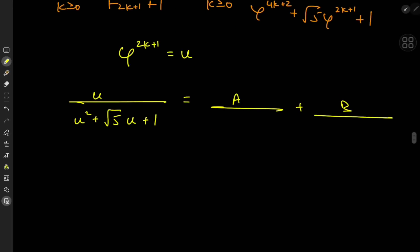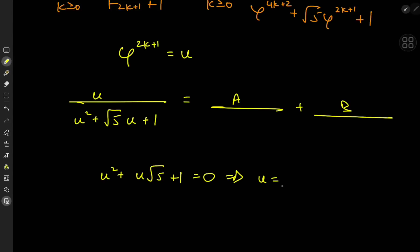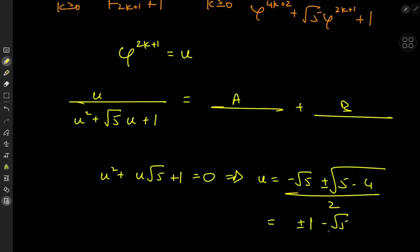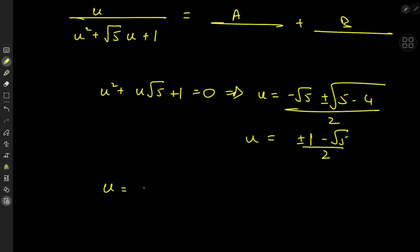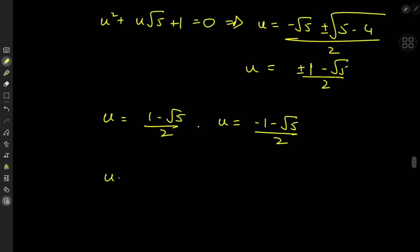To factorize u² + √5·u + 1, we look at the roots using the quadratic formula: u = (−√5 ± √(5−4))/2 = (−√5 ± 1)/2. So we have u = (1 − √5)/2, which is 1/phi... wait, that's phi-bar, which equals −1/phi. And the other root is −(1 + √5)/2, which simplifies to −phi.